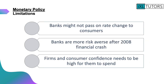That's what you need to know for monetary policy. Let's have a quick look at some limitations of it — there are three main limitations. The first is that banks might not pass on the rate change to consumers. If the Bank of England changes the base rate, the rate at which that change is passed on to consumers is not necessarily immediate, so there is going to be a time lag which we need to consider.